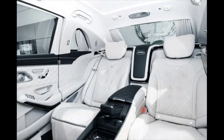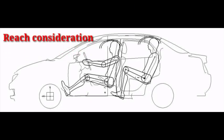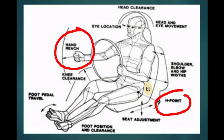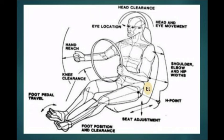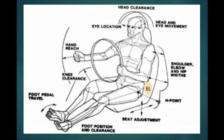We also have to consider ergonomic factors, like reach considerations. The position of the handle should be such that it is not too near or too far from the occupant's reach, providing comfort to the arm. The primary and secondary controls should be reachable without stretching the body of the occupant. All these factors should be cross-checked during door trim design.